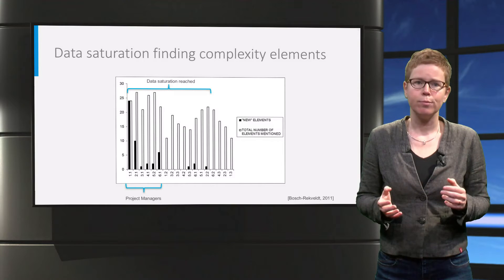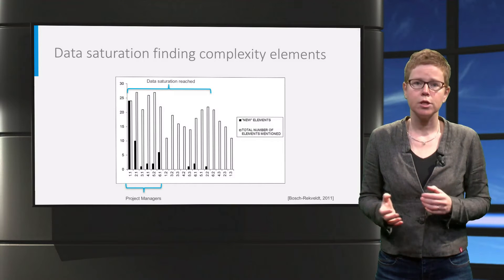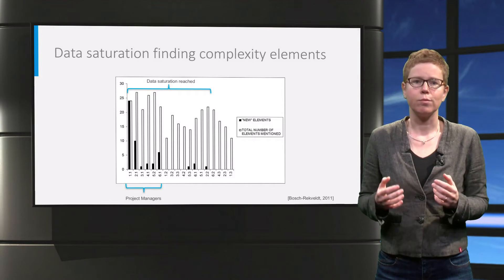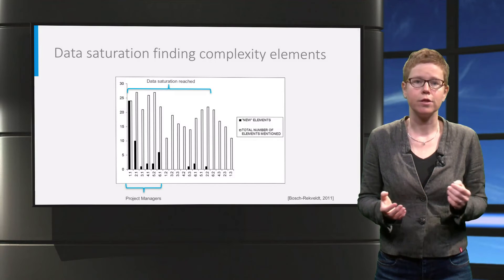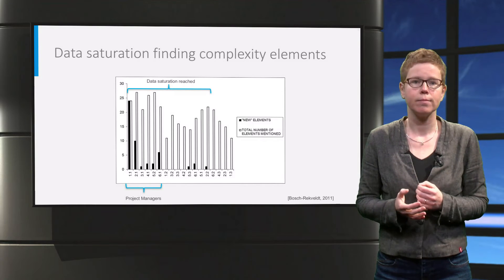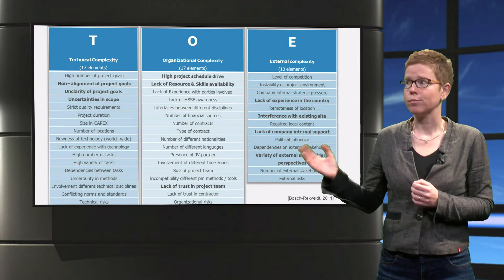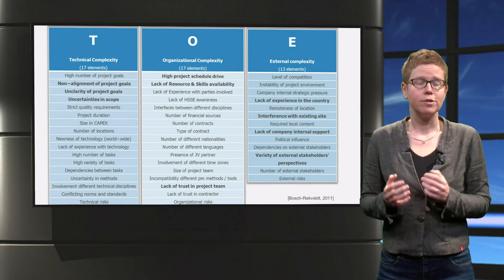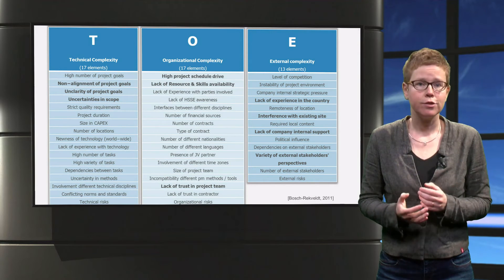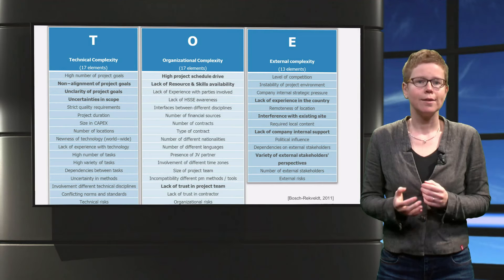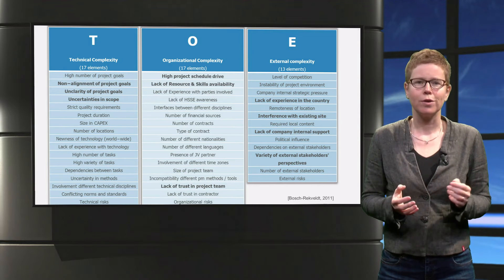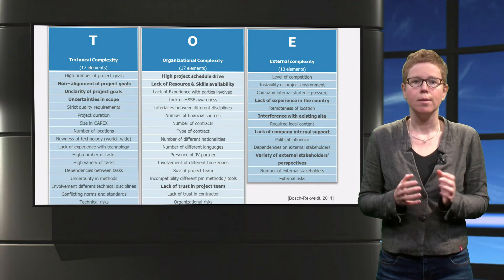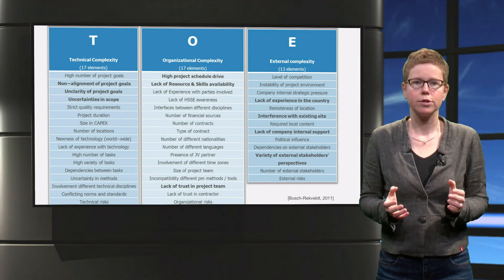As said before, the framework that was constructed was subsequently evaluated with data from more than 100 projects in different industries. And this is how the framework looks like. The elements in the T dimension cover goal-related elements, scope-related elements, task-related elements, etc. — mainly content-focused.